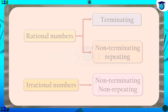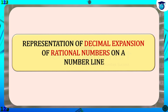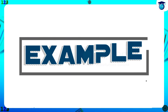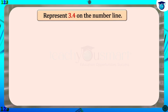Now we are going to see the representation of the decimal expansion of rational numbers on a number line. If the decimal expansion has just one digit after the decimal point, then it can be visualized by our naked eyes, but it is easier if we use a magnifying glass. For example, represent 3.4 on the number line.